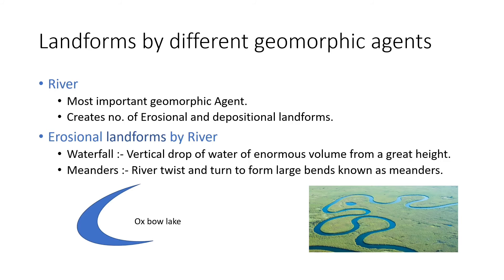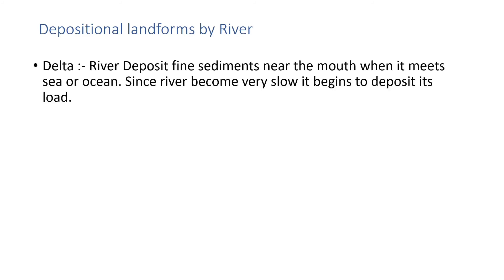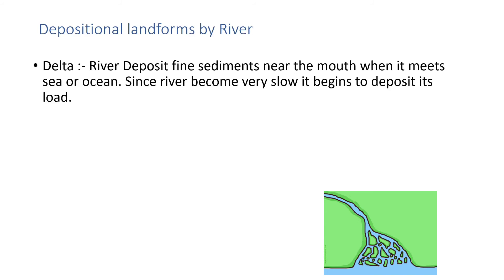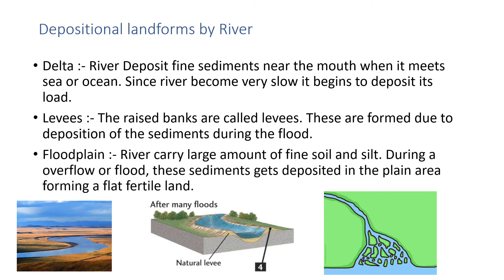Depositional landforms by the river include the delta, levees, and floodplains. A delta forms when the river deposits fine sediments near its mouth when it meets the sea or ocean — it is mainly triangular in shape. The Sundarbans delta is a well-known example. Raised banks called levees are formed due to deposition of sediments during floods. Floodplains form when rivers carry large amounts of fine soil and silt during overflow, depositing them in the plain area to form fertile flatland.